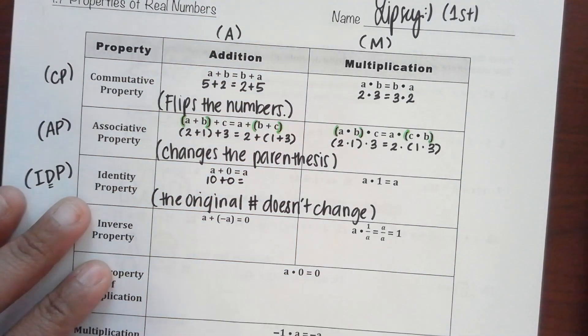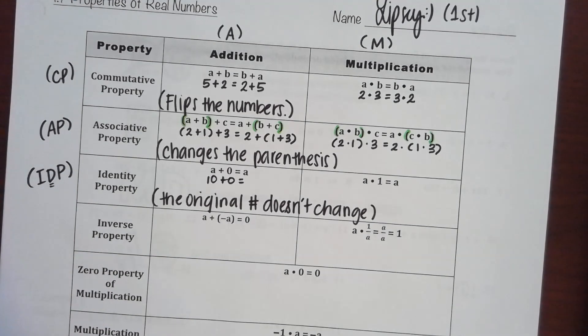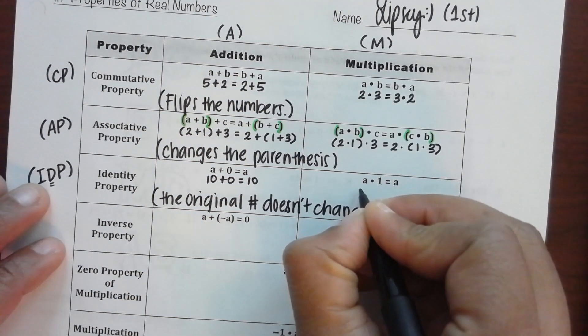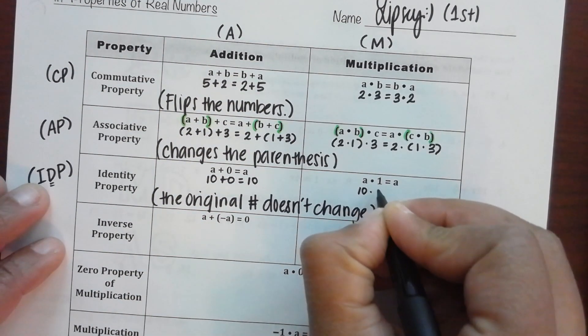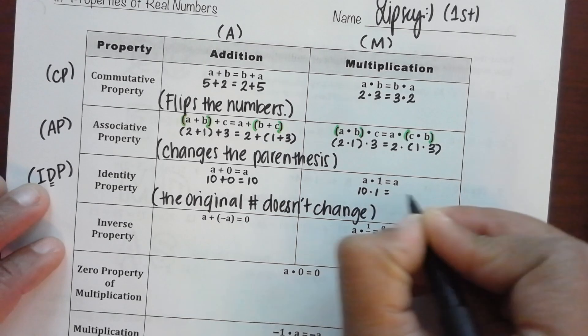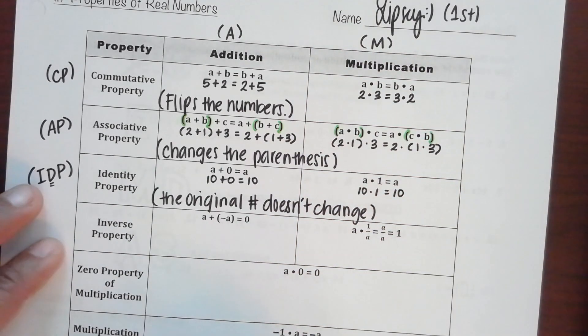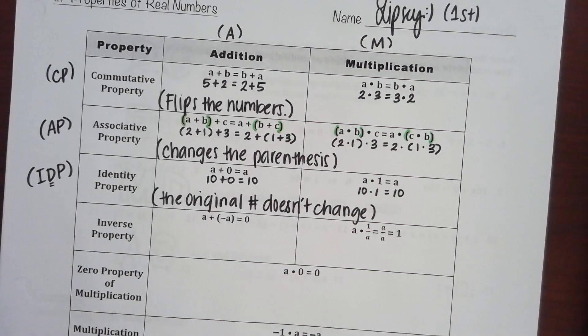You can plug any number in for a — I'm going to use 10. What is ten plus zero? Ten. What is ten times one? Ten. You can also use fractions for these, and it should still be true.